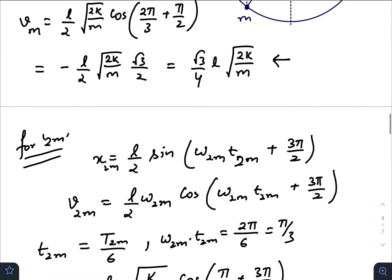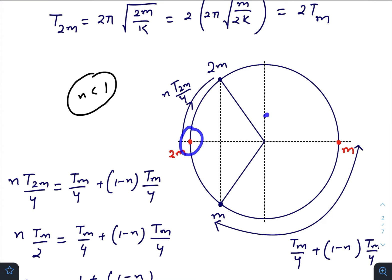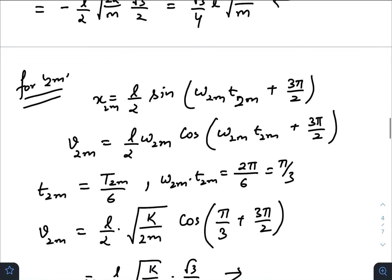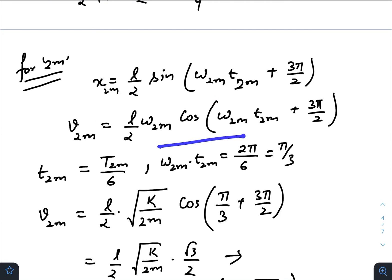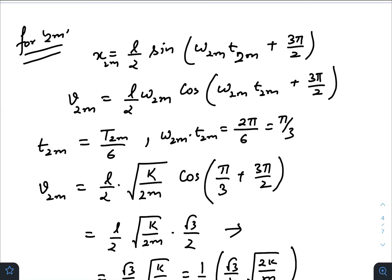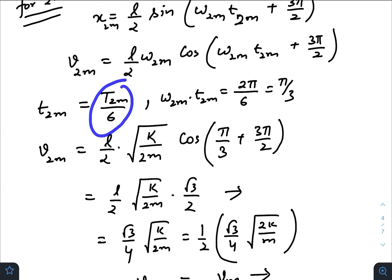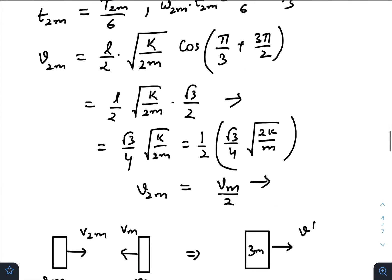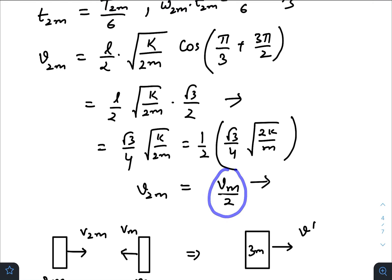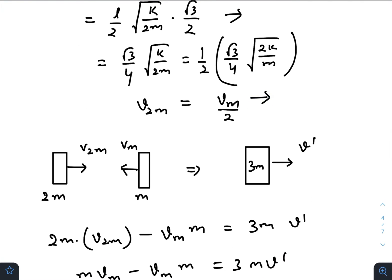For mass 2m, the displacement expression has an additional phase constant of π + π/2 = 3π/2. Differentiating gives the velocity. At the collision time t = T_2m/6, substituting gives v_2m. After calculating, v_2m equals half of v_m in magnitude, and the direction is towards the right. So just before collision: mass 2m moves with velocity v_2m towards the right, and mass m moves with velocity v_m towards the left.